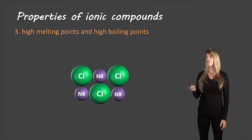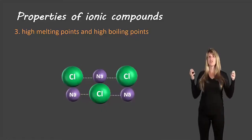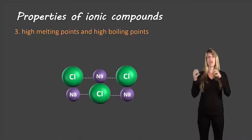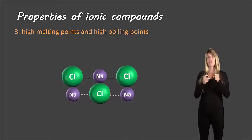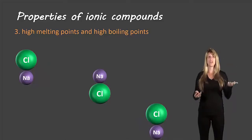Here's an animation: we have three formula units attracted to each other, and it's very difficult to pull them apart because each sodium ion is attracted to the chloride ions of neighboring formula units and vice versa. Eventually, if the temperature is high enough, you can pull them apart — but that required high temperature is why ionic compounds have high melting and boiling points.